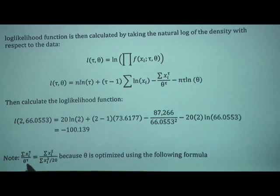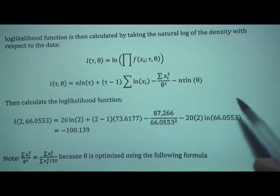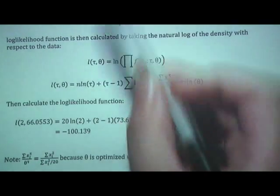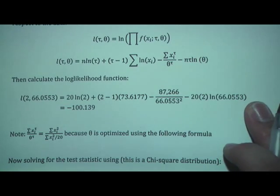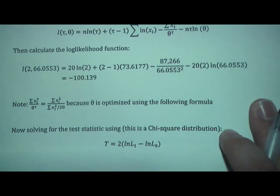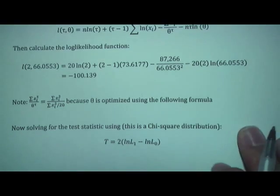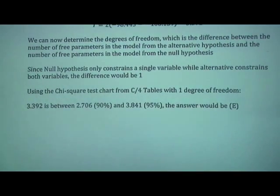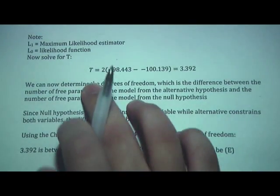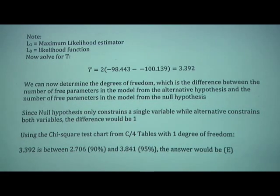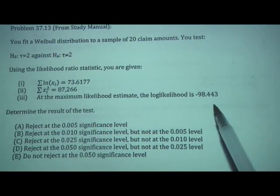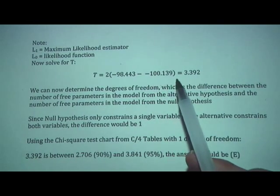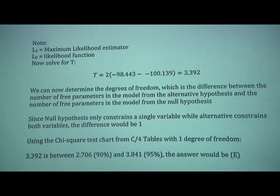Note that in the formula we have the sum of x_i to the tau over theta to the tau, which is similar to what was used earlier to optimize theta, simplifying your steps. Now solve for the test statistic: T equals 2 times [ln L₁ minus ln L₀], where L₁ is the maximum likelihood estimator. Using negative 98.443 (given) minus negative 100.139 (calculated), you get a test statistic of 3.392.